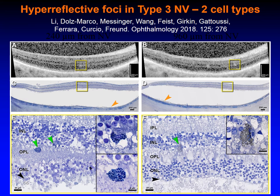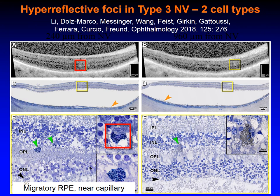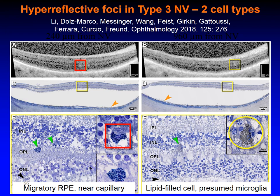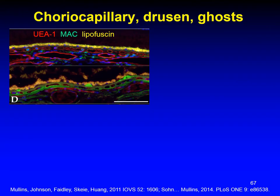Why do these cells migrate into the retina? From this clinical-pathologic correlation of type 3 neovascularization, we can see that hyperreflective foci can be accounted for by two cell types. Fully pigmented RPE can migrate into the retina right up to a capillary, suggesting that it is seeking oxygen, consistent with modeling studies indicating reduced oxygen levels at the top of a large druse. Here is a lipid-filled cell that we think is of microglial origin, scavenging extracellular lipids from exudation.